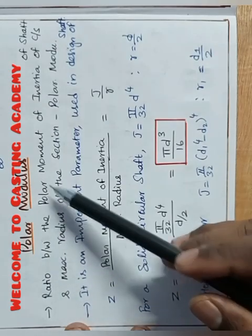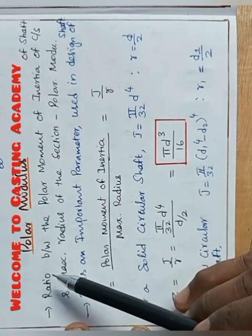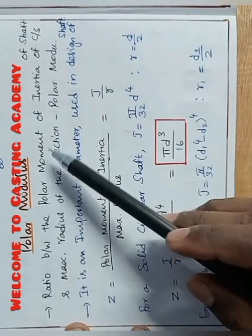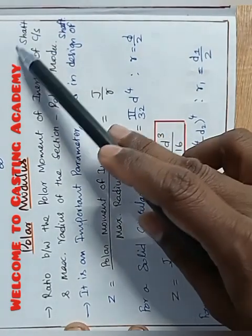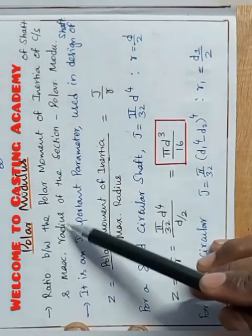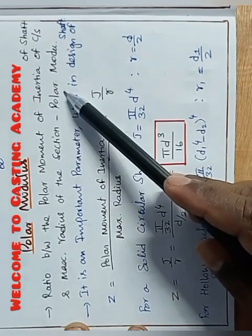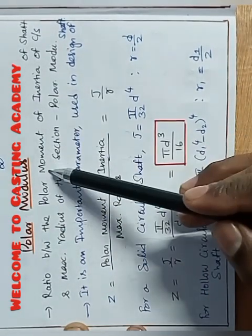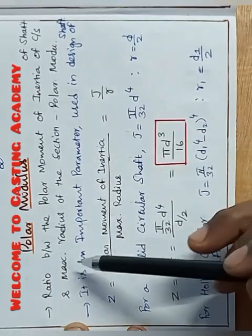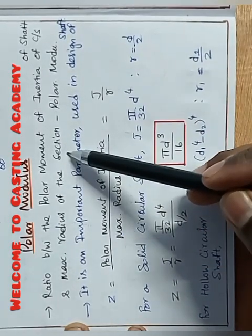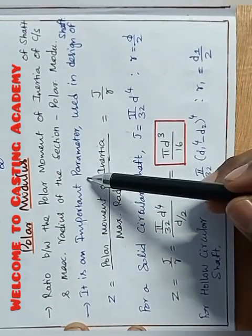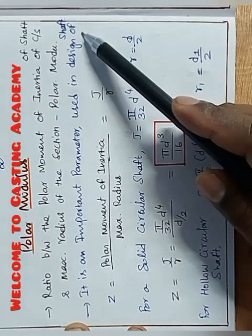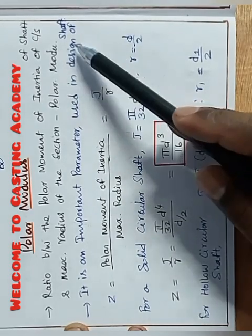Polar modulus. Ratio between the polar moment of inertia of cross section of the shaft and maximum radius of the section. That is called polar modulus. Ratio between the polar moment of inertia to the maximum radius of the section. It is an important parameter used in the design of the shaft. Very important for design of the shaft.